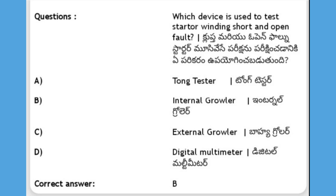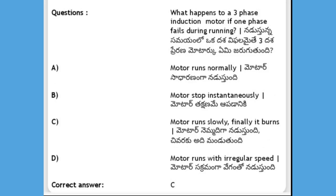Which device is used to test stator winding short and open faults? Options: tongue tester, internal growler, external growler, digital multimeter. The answer is B, internal growler.